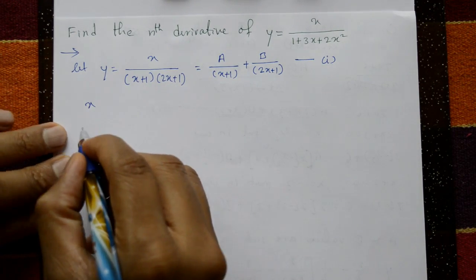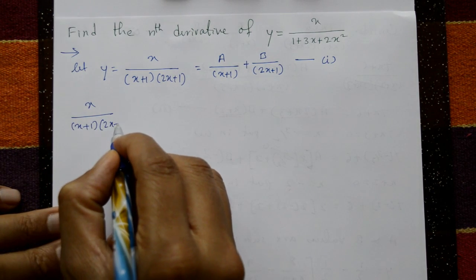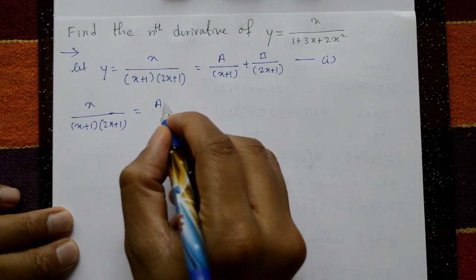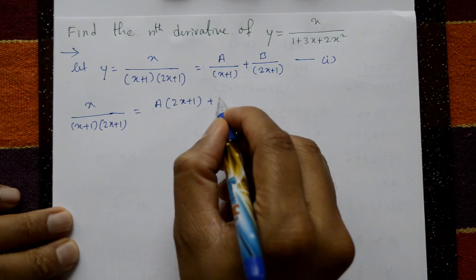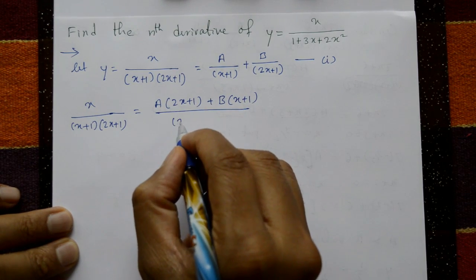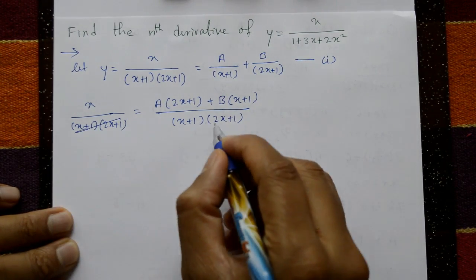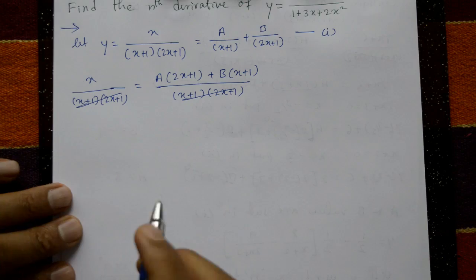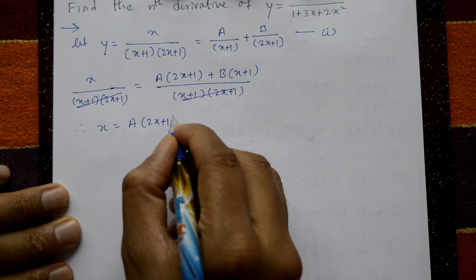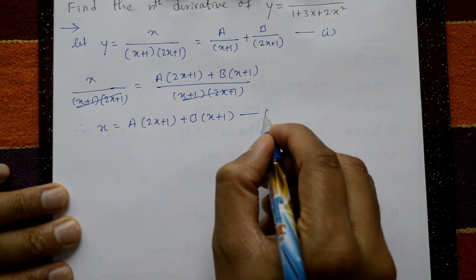By cross multiplication: x / [(x+1)(2x+1)] = [A(2x+1) + B(x+1)] / [(x+1)(2x+1)]. Both side denominators cancel, so therefore x = A(2x+1) + B(x+1). This is equation number 2.